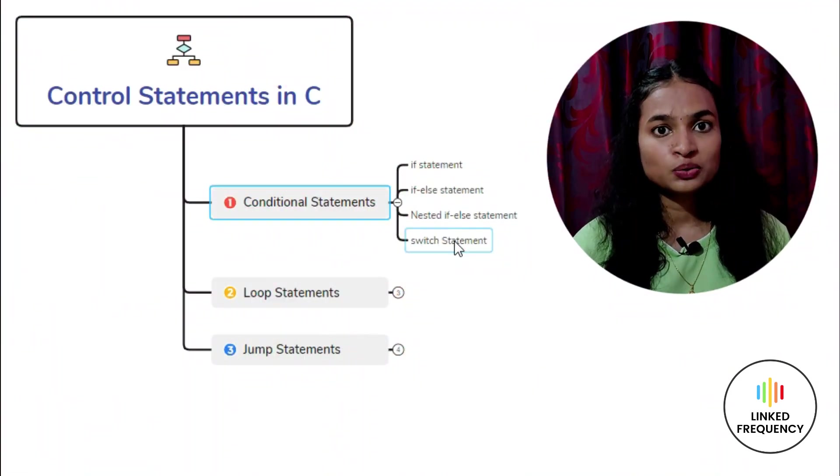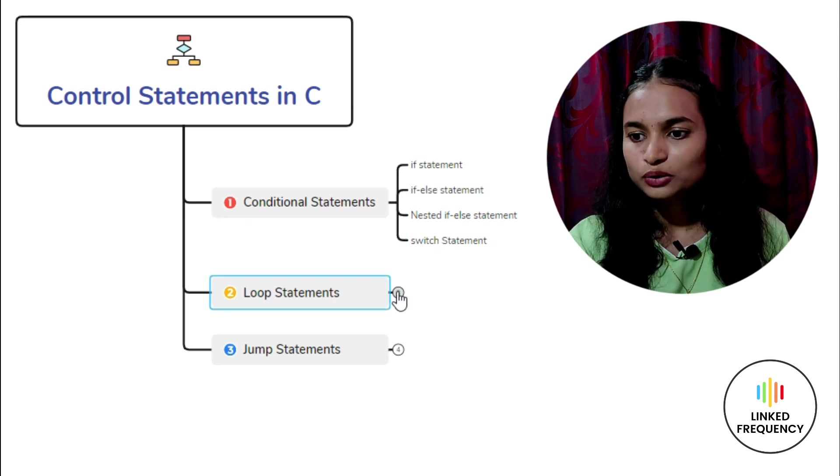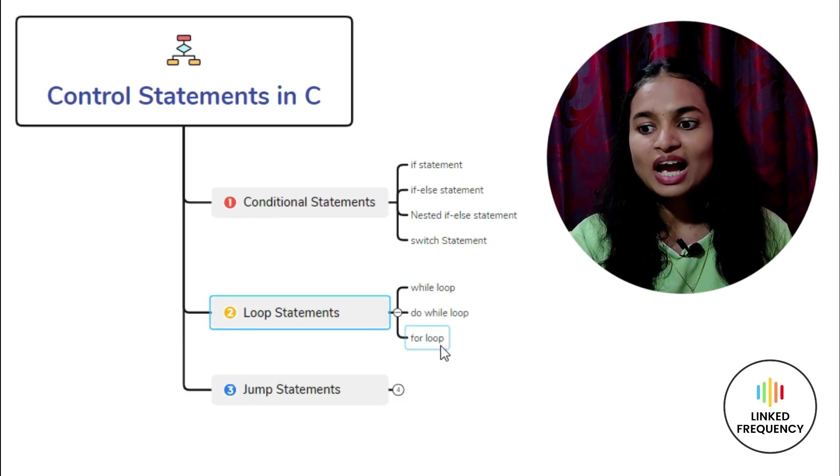Moving on to our second type: loop statements. Loop statements are also known as repetitive statements. The process of repeatedly executing a collection of statements is called looping. In short, a loop statement in C executes a set of statements repeatedly until the condition becomes false. Loop statements include the while loop, do-while loop, and lastly the for loop.